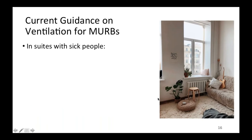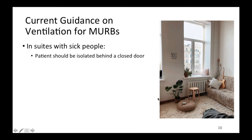Ventilation is one area where the discussion on larger and smaller droplets becomes really relevant because everyone wants a technological solution, and unfortunately it's not going to be that easy. Because most transmission is occurring between two closely interacting humans, good ventilation is at best going to be an environmental support — it's not going to be a solution to the problem. The role of ventilation in the public health response to COVID is really dependent on the setting. For residential buildings, you can break it down into what happens in suites versus what happens in the whole building.